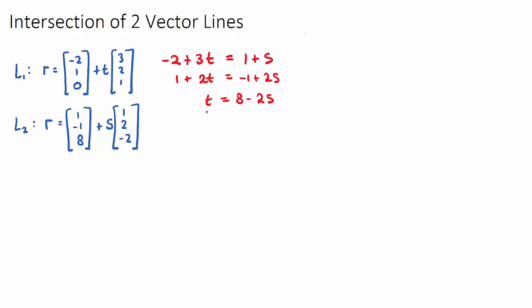I've spotted here that t is by itself, t is equal to 8 minus 2s. What I'm going to do is sub this t, 8 minus 2s, into either equation 1 or equation 2. It doesn't matter which one. I'm just going to sub it into this one here.